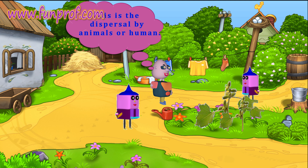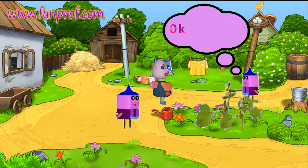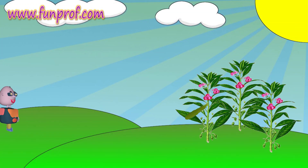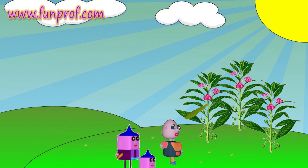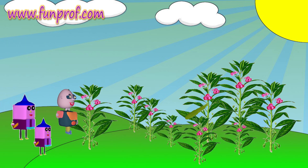Now I want to learn more about dispersal, says Adam. His friend says, okay, let's go. They go to see how seeds disperse by explosion. They go to a balsam tree. There, the balsam burst and its seeds came onto the ground. When they came back after some weeks, there were many balsam trees. These four were the methods of seed dispersal, says Adam's friend.